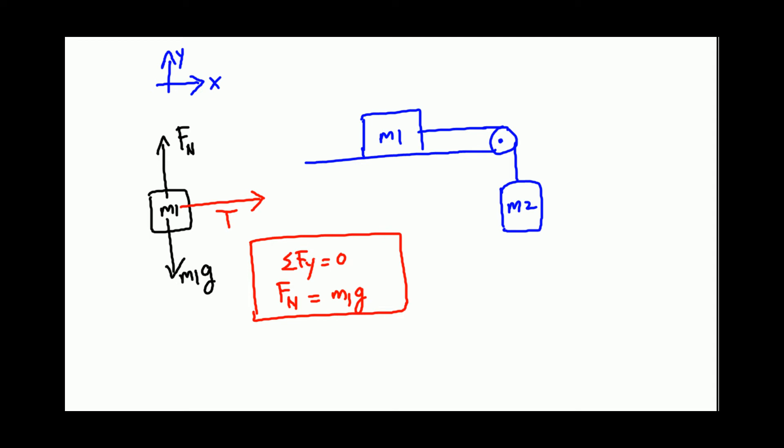What about along the horizontal? Along the horizontal you have net force along the horizontal equals m1a. T is the only force along the horizontal, so you say T equals m1a.